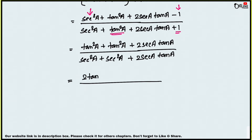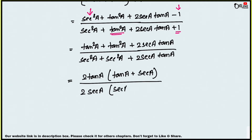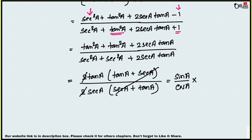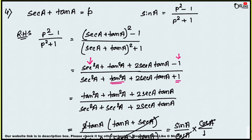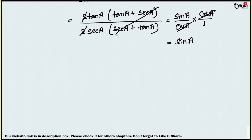Factoring the numerator: 2 tan a(tan a + sec a). Factoring the denominator: 2 sec a(sec a + tan a). The 2 and (sec a + tan a) cancel. We're left with tan a / sec a = (sin a / cos a) / (1 / cos a). The cos a terms cancel, giving sin a. Proved.